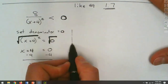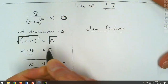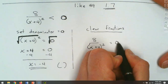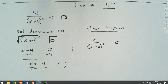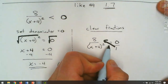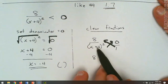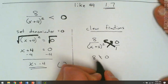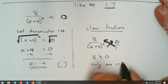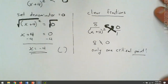Now we clear the fractions and set it equal to zero. When we cross multiply, 8 times 1 is 8, and zero absorbs everything — so that's just zero. Since 8 can't equal zero, we only have one critical point. Because of that zero, we only have one critical point.